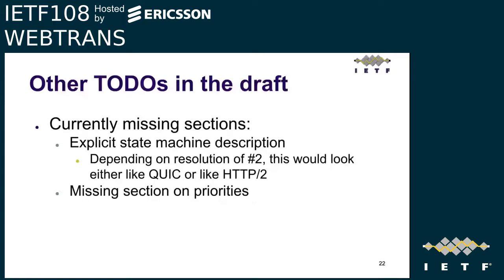Victor outlined missing pieces in the draft: the stream state machine needs to be spelled out for both the transport-level and stream-level state machines, which will be important reference when defining the API. There are also open to-do items in multiple sections, with the biggest being the question of what to do with priorities — though that is not yet pressing. Victor invited everyone to comment on these issues and send pull requests.